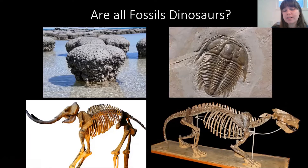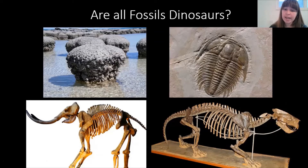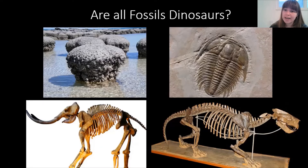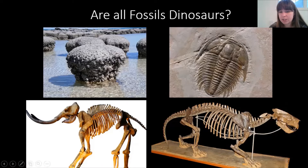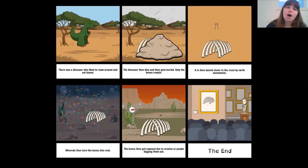These bottom two fossils are animals that fossilized after dinosaurs went extinct. The bottom left is the fossil of a woolly mammoth, which lived during the ice age. In the bottom right we have an early ancestor of many modern wild cats — think tigers, jaguars, cheetahs. This animal is called Patriofelis ferox, and even though it's really really old, it actually existed after dinosaurs went extinct.